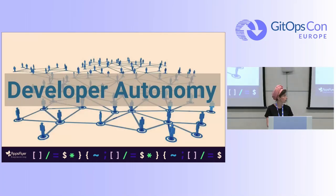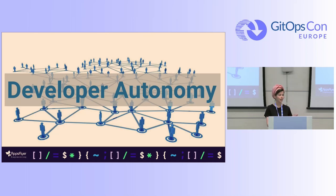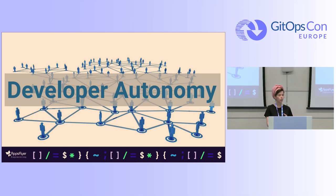We looked at developer autonomy. Our teams work in squads, meaning they should work in full autonomy, but we saw that's not really the case. A lot of times developers need help and assistance from the platform team. They don't know how to build basic infrastructure, they're missing permissions. As a platform engineer, we get multiple tickets from developers who don't know how to do something or are missing permissions and need to wait for us.